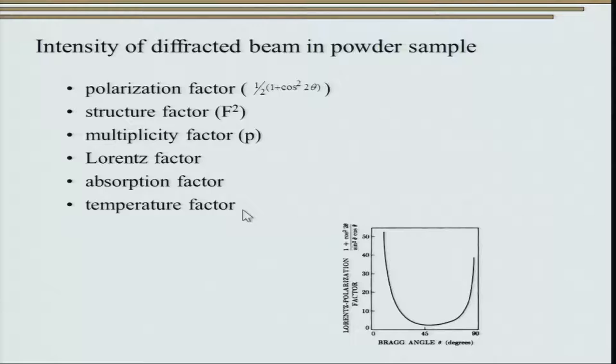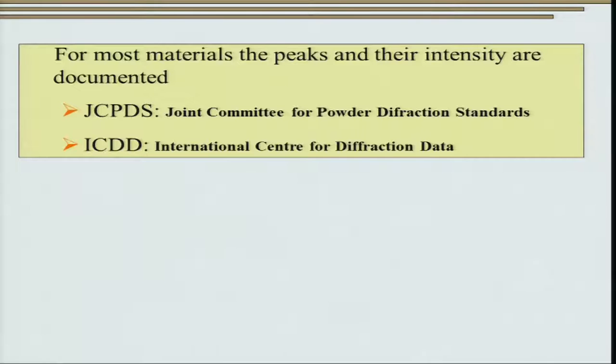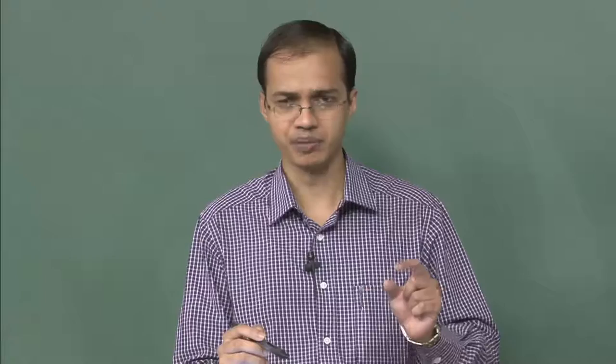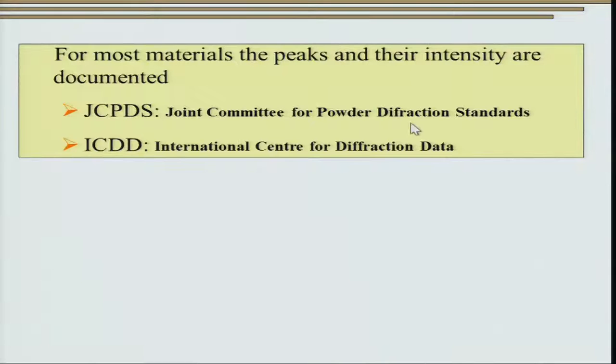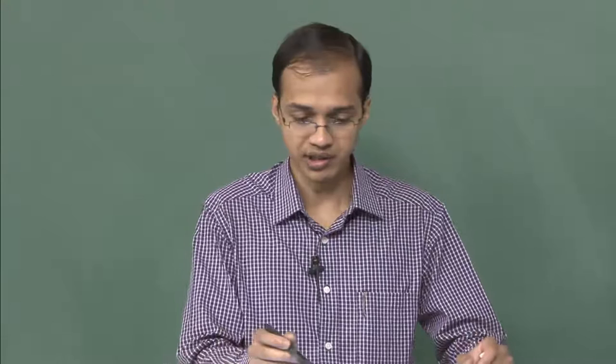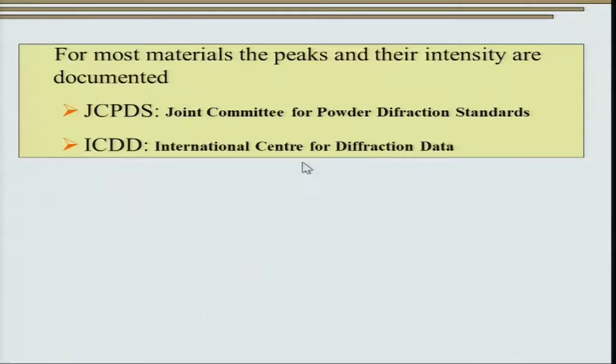Having understood the various factors governing the intensity of the diffracted beam, we now shift focus to the actual indexing process. All peaks in a diffractogram can be indexed manually and then compared with a lookup table. The earlier lookup table was maintained by the Joint Committee for Powder Diffraction Standards, which contained standard charts with all diffraction information tabulated for specific materials.